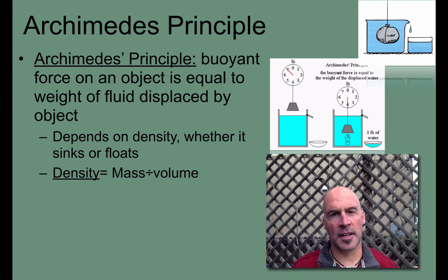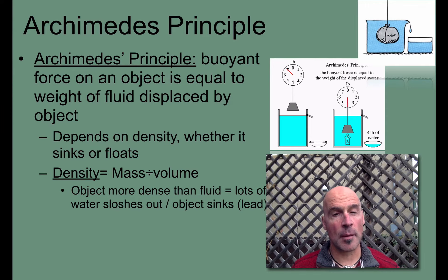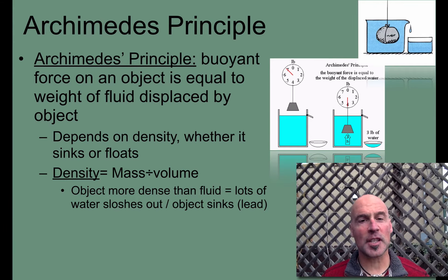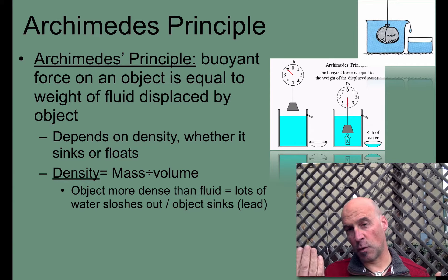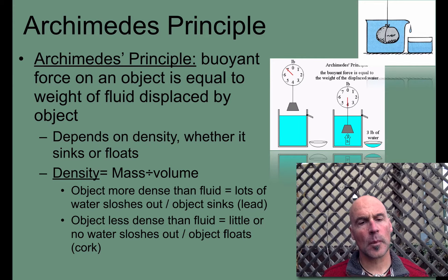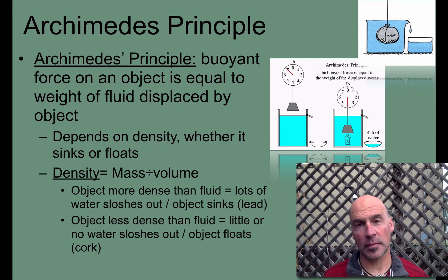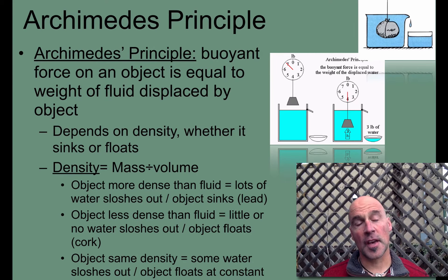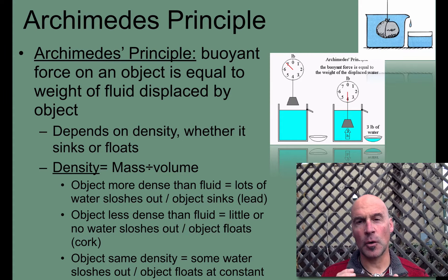The way to find density is to divide the mass by the volume. If an object is more dense than the fluid, a lot of water is going to slosh out and the object sinks all the way to the bottom — a good example would be lead. If an object is less dense than the fluid, little or no water will slosh out and the object floats like a cork. If the object is the same density as the fluid, some water will slosh out and the object floats at a constant level.